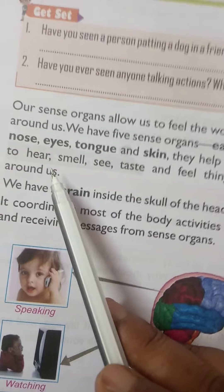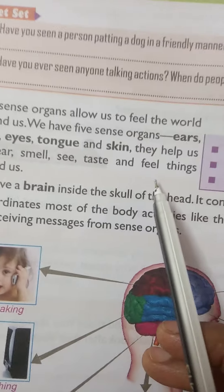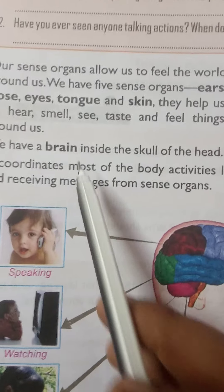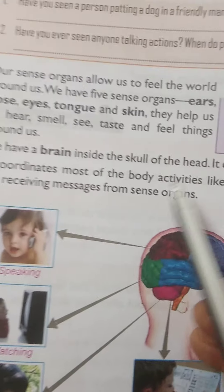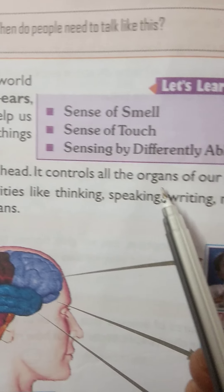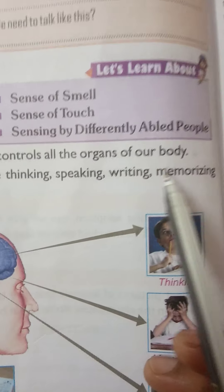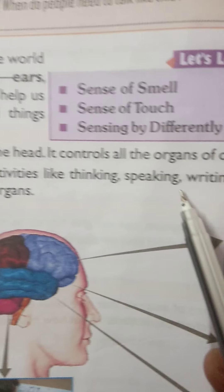We have a brain inside the skull of the head. It controls all the organs of our body. It coordinates most of the body activities like thinking, speaking, writing, and memorizing.